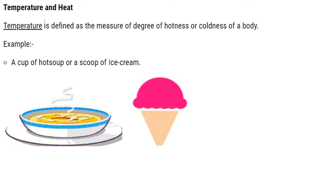Temperature is defined as the measure of the degree of hotness or coldness of a body. It is not defined as hotness or coldness but as the measure of degree of hotness and coldness of a body. For example, a cup of hot soup has a higher measure of degree of hotness than a scoop of ice cream.